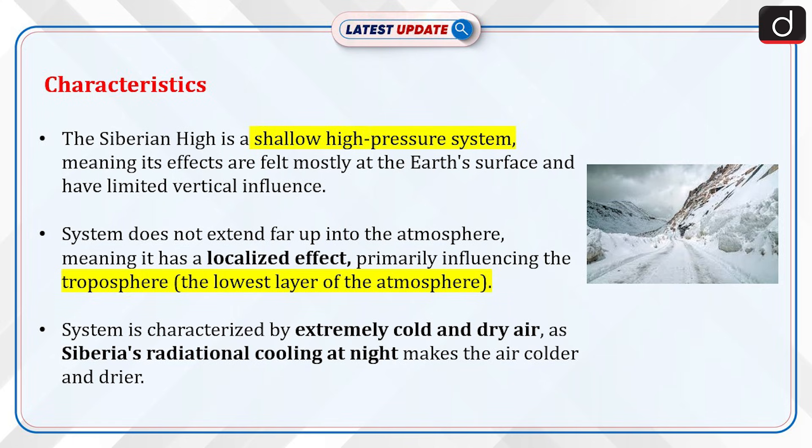The Siberian High is a shallow high-pressure system, meaning its effects are felt mostly at the Earth's surface and have limited vertical influence. The system does not extend far up into the atmosphere, meaning it has a localized effect, primarily influencing the troposphere, the lowest layer of the atmosphere.